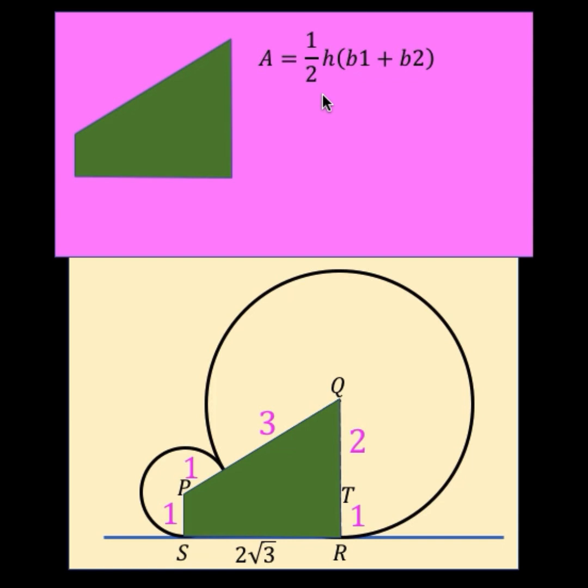So substituting the height and base values, we have the height equals 2 square root of 3, that is the length of segment SR. Base 1 is this radius which is 3 units and base 2 is this other radius which is 1 unit. Simplifying this gives us 4 square root of 3 for the area of this trapezoid.